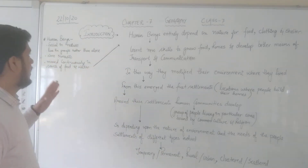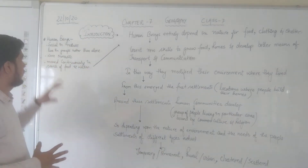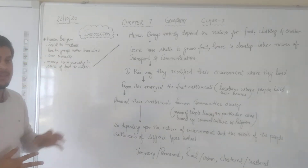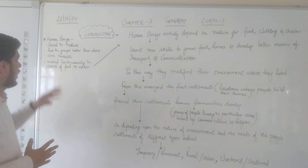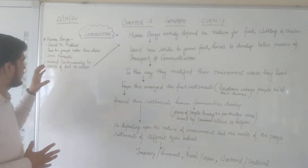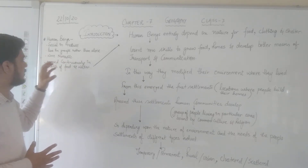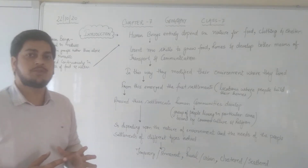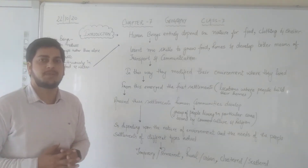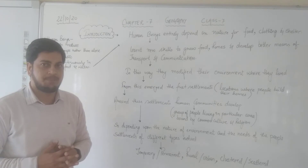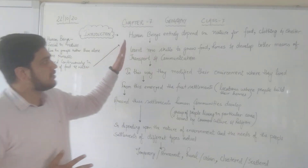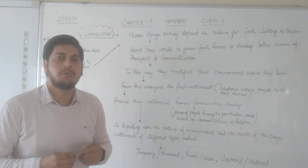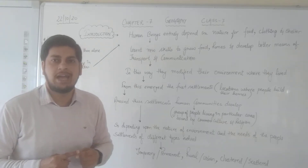As we know, human beings were social in nature and lived in groups rather than living alone. They were nomadic and somehow moved continuously in search of food and water. We have understood all these things in our previous chapters of history and geography. So human beings entirely depended on nature for getting their food, water and shelter.